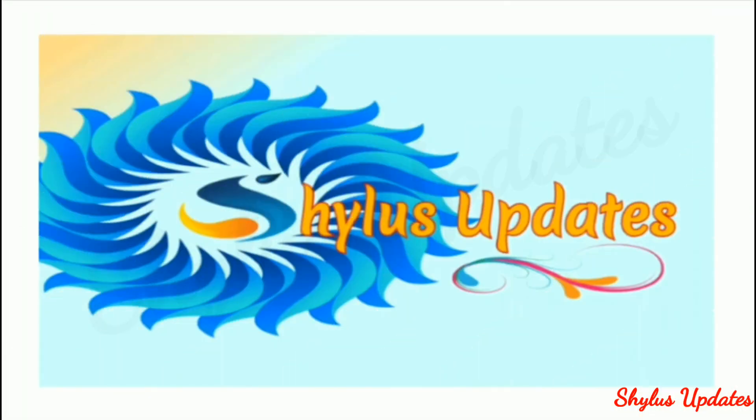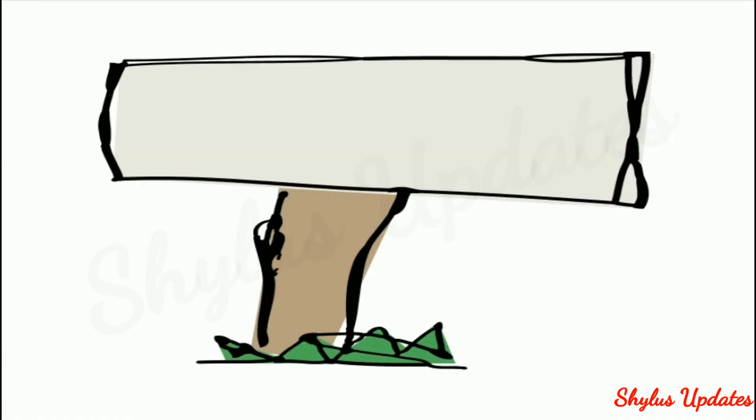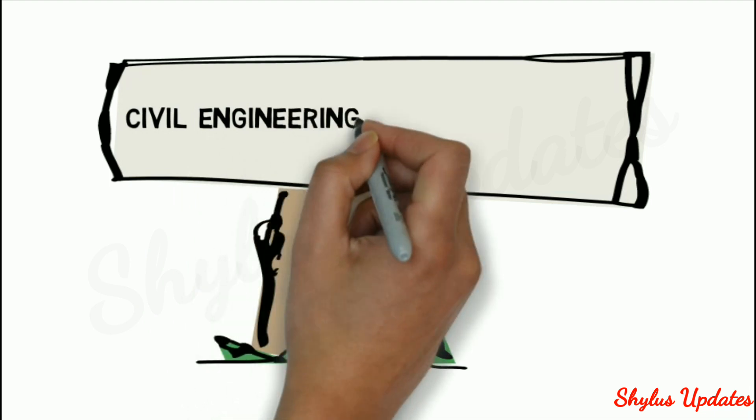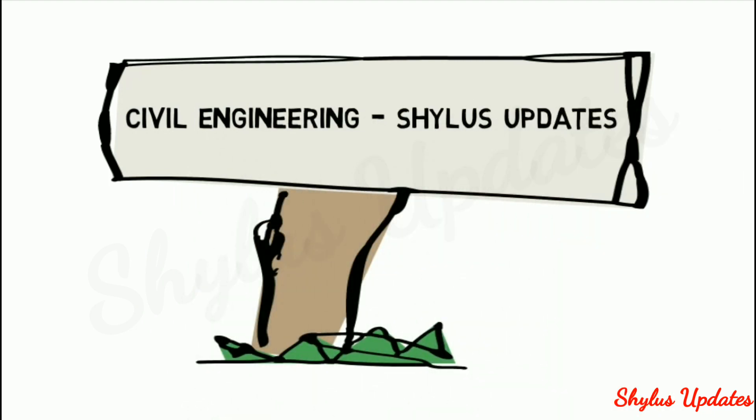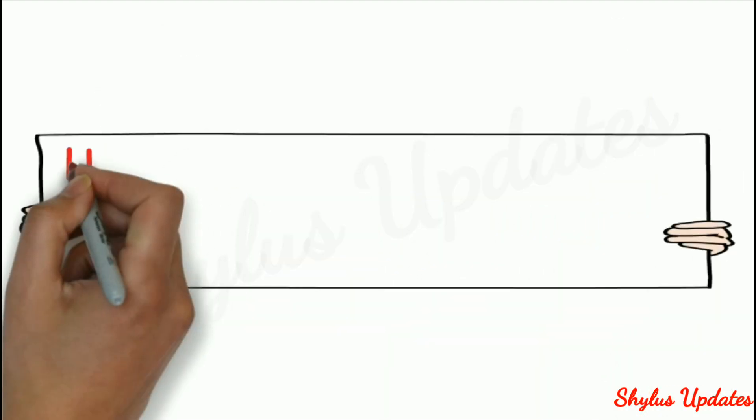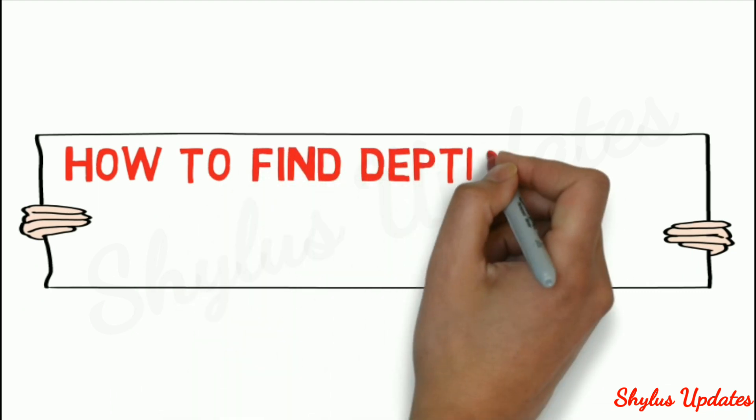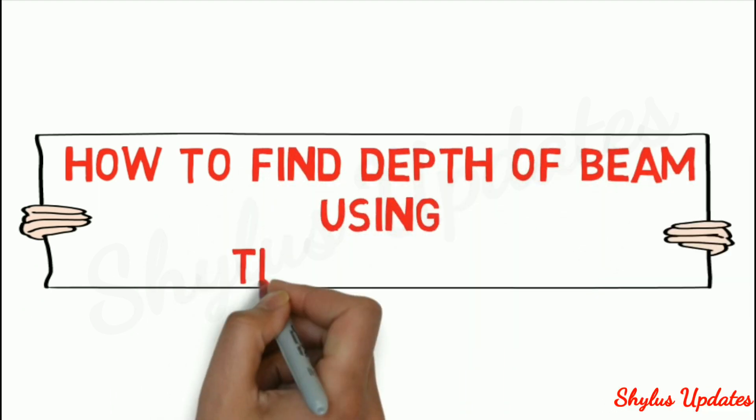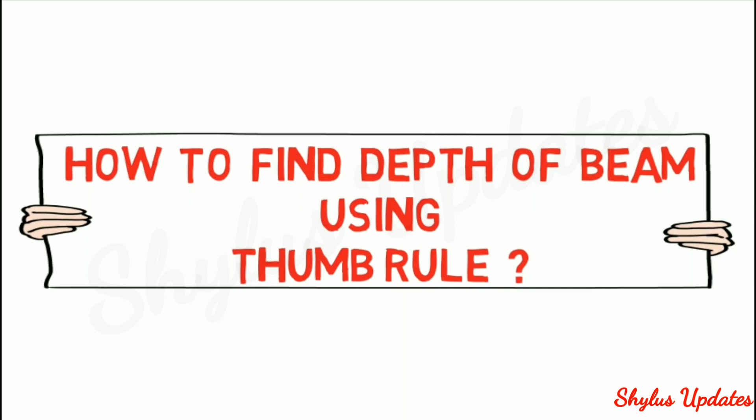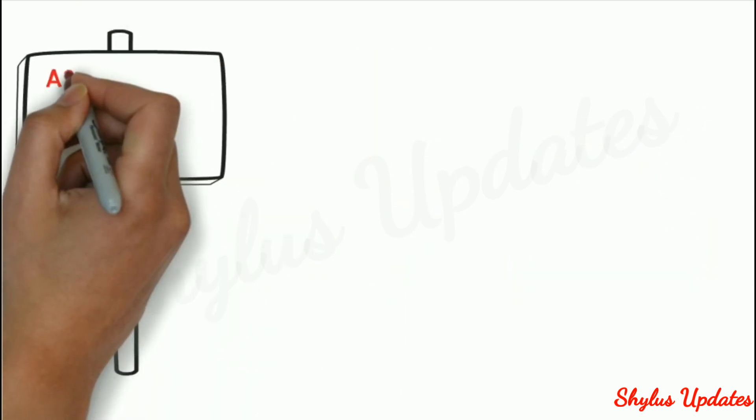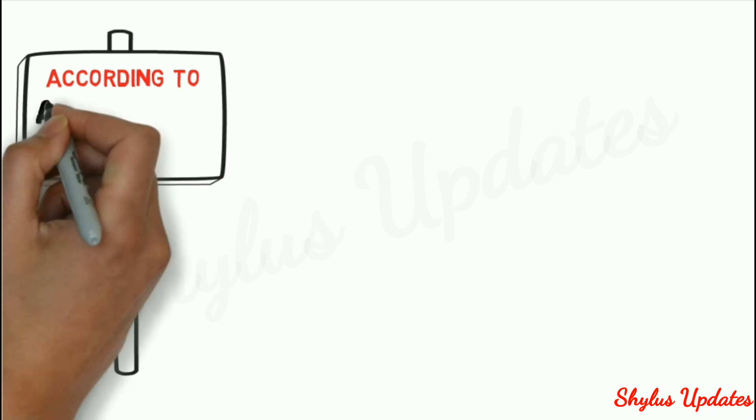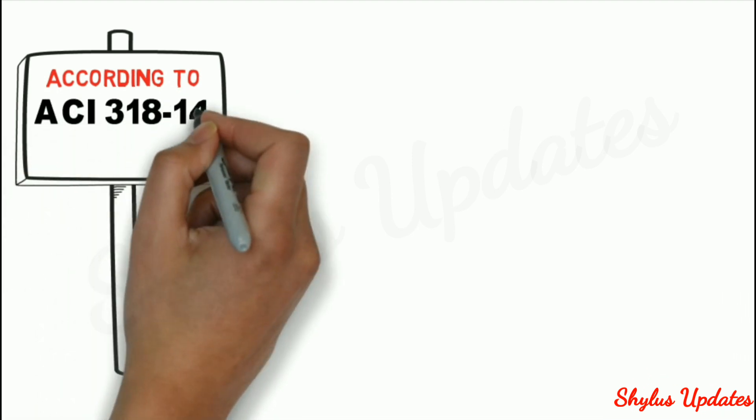Hello viewers, welcome to Civil Engineering Shylus Updates. Today we are going to learn how to find depth of beam using thumb rule according to ACI 318-14 code.